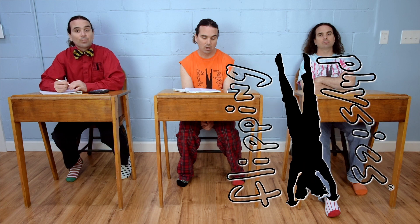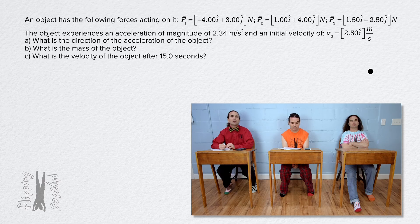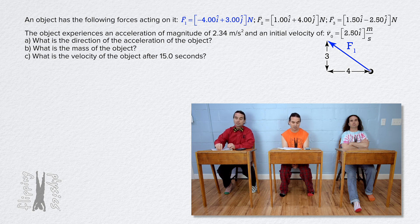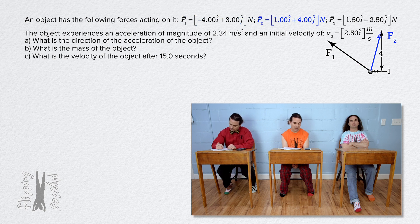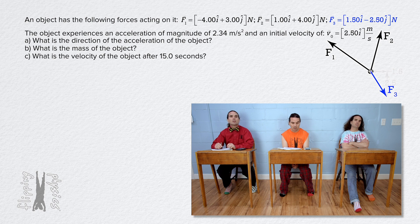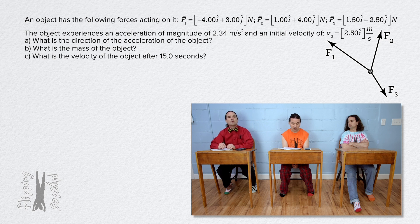Good morning. Bobby, please read the problem. An object has the following forces acting on it. Force 1 equals negative 4.00i plus 3.00j newtons. Force 2 equals 1.00i plus 4.00j newtons. Force 3 equals 1.50i minus 2.50j newtons. The object experiences an acceleration of magnitude 2.34 meters per second squared and an initial velocity of 2.50i meters per second. Part A: what is the direction of the acceleration of the object? Part B: what is the mass of the object? Part C: what is the velocity of the object after 15.0 seconds?